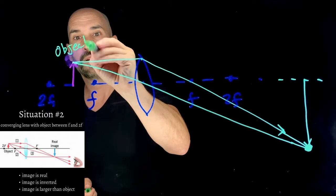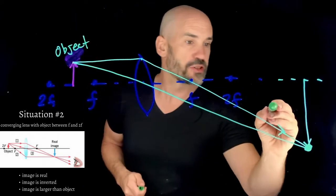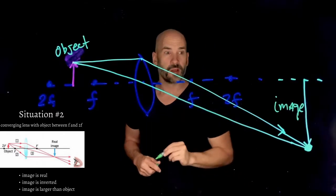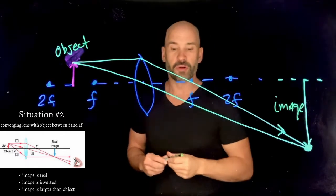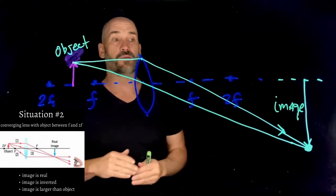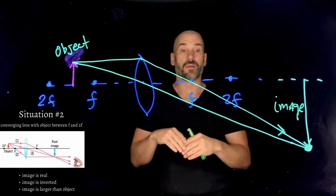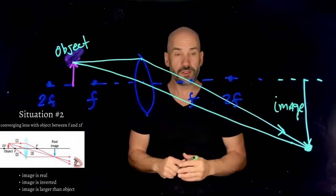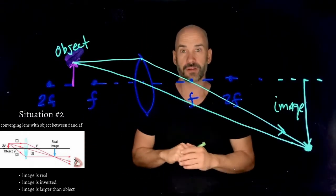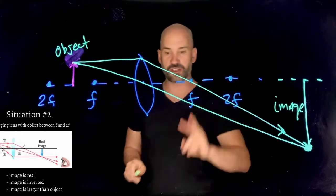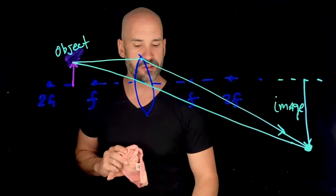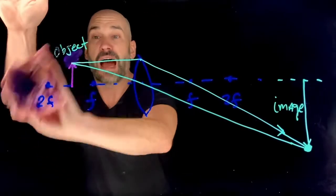It's a real image because actual light is converging at this point. And this time it's very clear that the image is much larger than the object. So whereas in the last case the object was outside 2f and we shrank the image, now we're actually magnifying the object. That's situation number two.